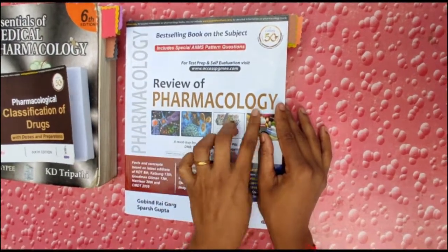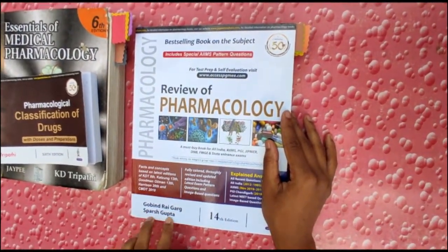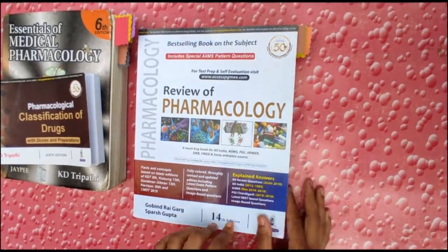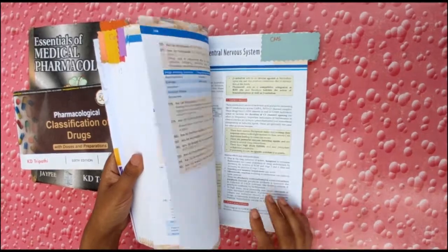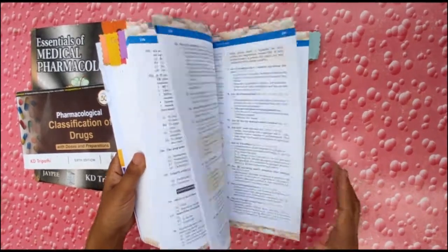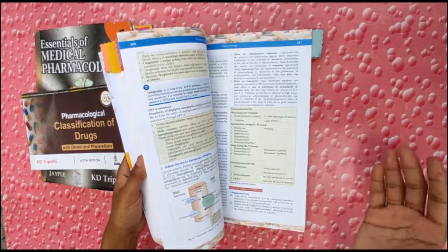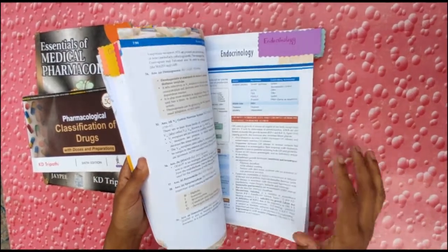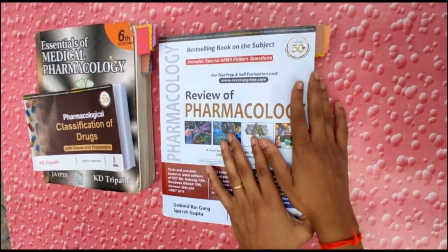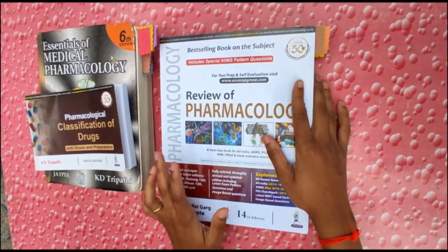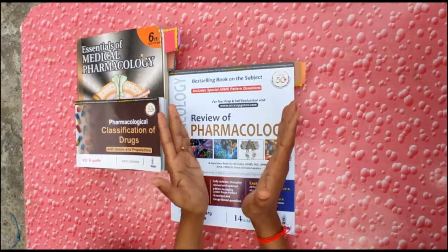Third is the Review of Pharmacology by Govind Rai Garg and Sparsh Gupta, 14th edition. In this book a lot of most important points are given, along with MCQs, diagrammatic representations, tables, and notes. This book is most important if you want to rank in GPAT.